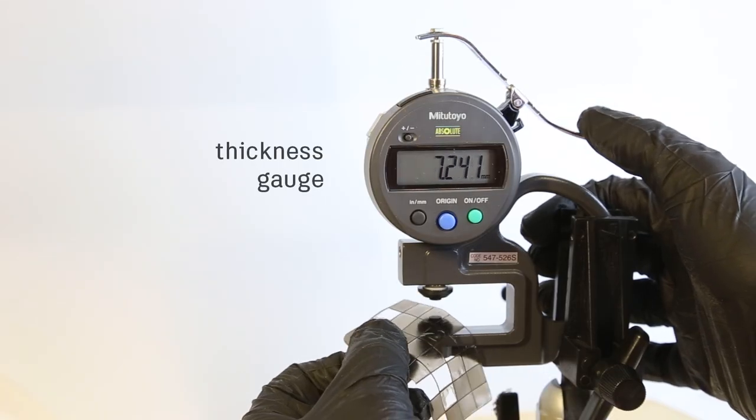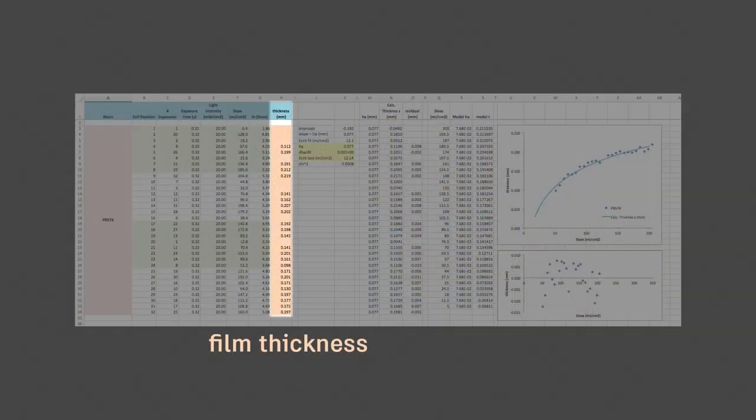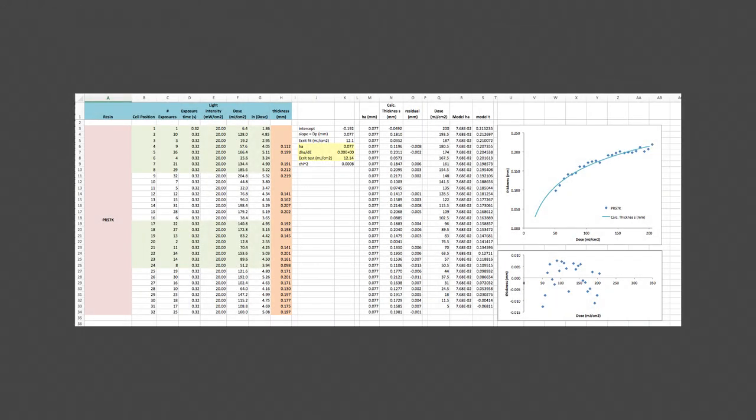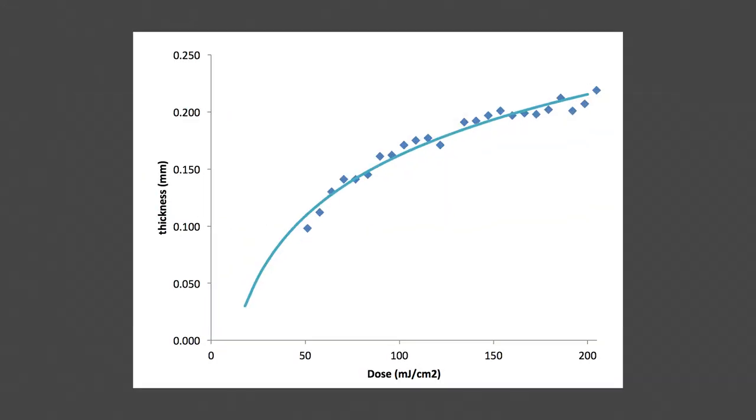Next, we use a thickness gauge to carefully measure the thickness of each panel. Then record the measurements onto a spreadsheet. The spreadsheet creates a plot of thickness vs light dosage. We use a logarithmic fit to extrapolate into the layer thicknesses we are interested in, namely 10 to 100 microns.